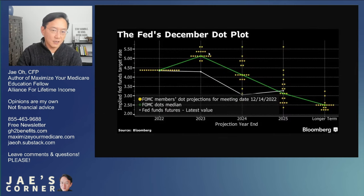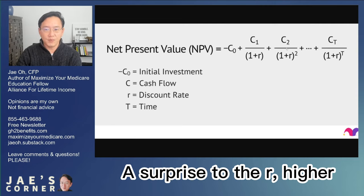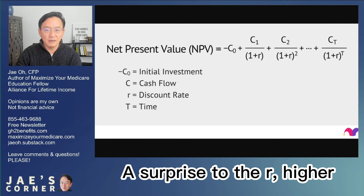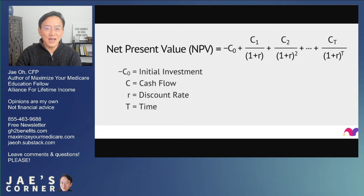So yesterday, this dot plot here — these dots, like a Christmas tree — basically called into question the R in the denominator. Let's say C1 is this year, C2 is next year. The issue is this R down here is higher than what people thought was going to be on that dot plot. As a result, denominator higher. What does that mean? NPV lower. Period. That's it.